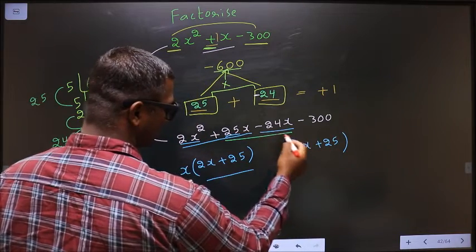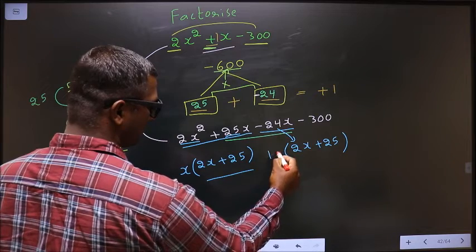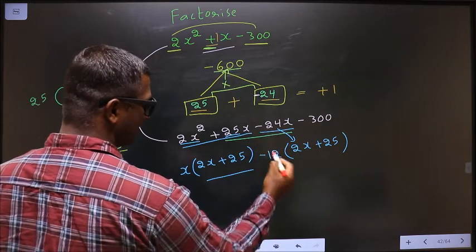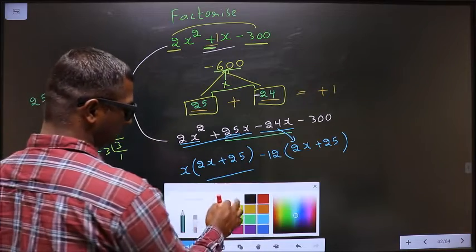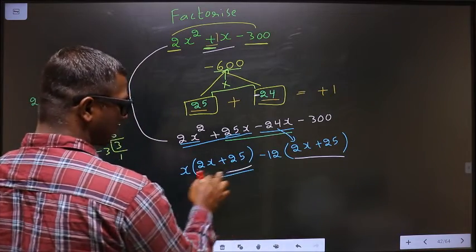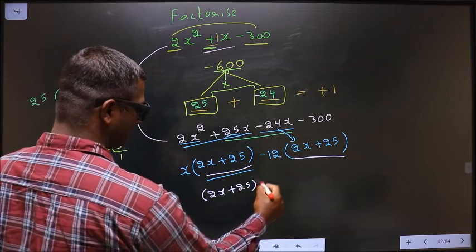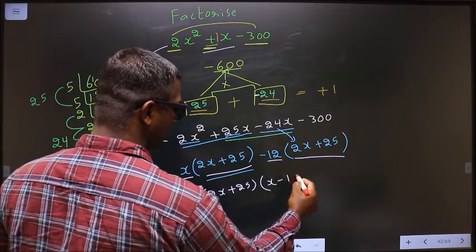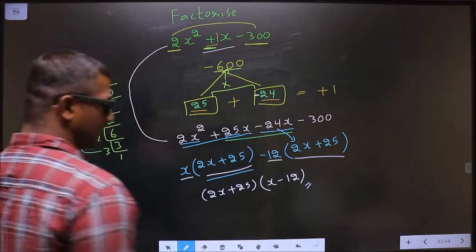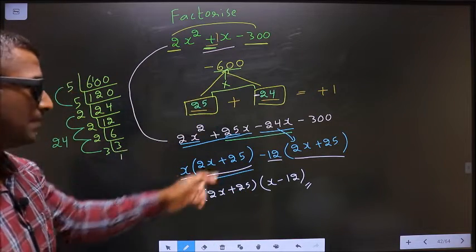From the last two terms, factor out -12: -12(2x + 25). Now you have the same bracket (2x + 25) in both terms. Take it out as common: (2x + 25)(x - 12). This is our answer.